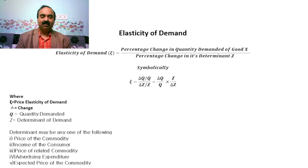Determinant of demand may be any one of the five: One, price of the commodity. Two, income of the consumer. Three, price of related commodity. Four, advertising expenditure. Five, expected price of the commodity.